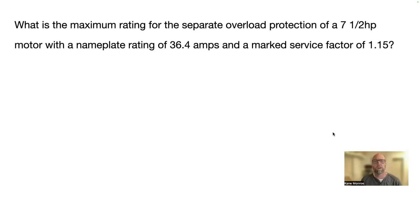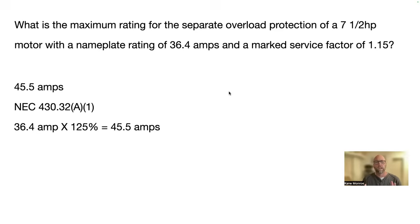Guys, remember, your overloads are not your overcurrent protection. Your overloads are your heaters. Your overloads are always your heaters and you'll always use your 36.4. There is a factor because they're telling you 1.15. So what we do is we go to NEC 430.32 A1 and look in that chart and it says if there's a service factor marked on the nameplate of 1.15 or greater, you multiply your FLA by 1.25 or 125%. So 36 amps times 125% is 45.5 amps. So your answer would be 45.5 amps.